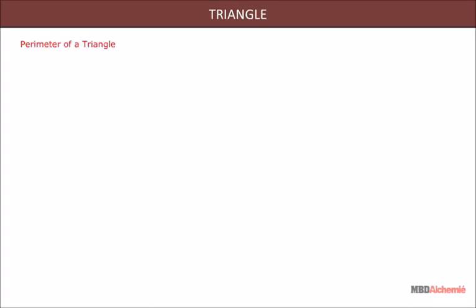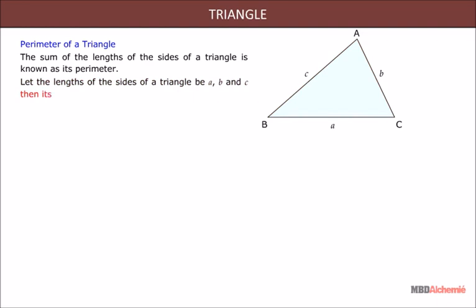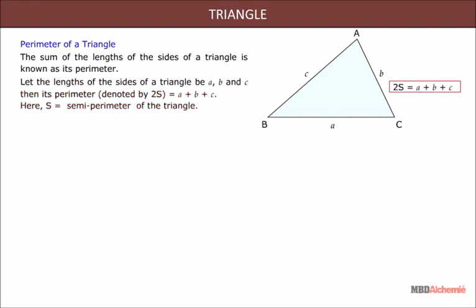Perimeter of a triangle: the sum of the lengths of the sides of a triangle is known as its perimeter. Let the lengths of the sides of a triangle be a, b and c. Then its perimeter, denoted by 2S, is equal to a plus b plus c. Here, S is the semi-perimeter of the triangle.